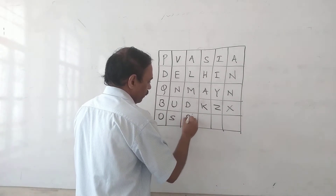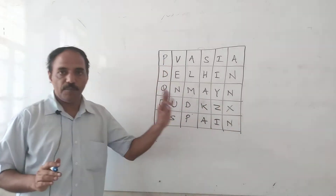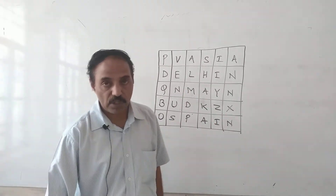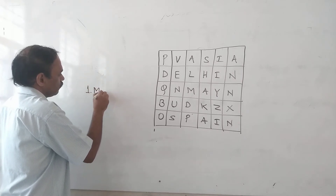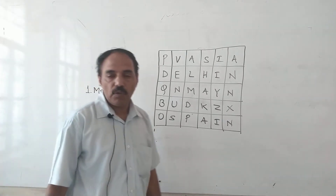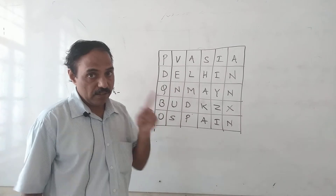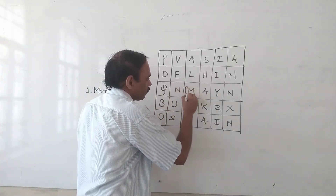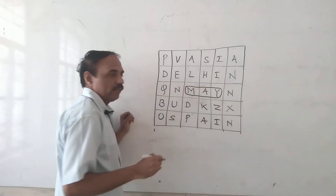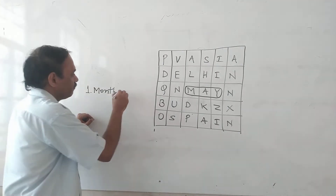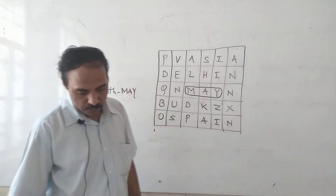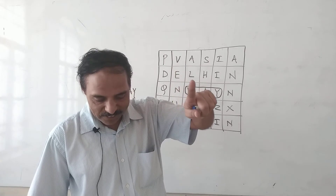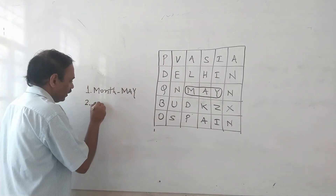The word SPAIN is there. Now, first - with their common name. Month - one month is January, February, March, April, May. See, May is in the puzzle. So this is May - a proper noun, and its common name is month.